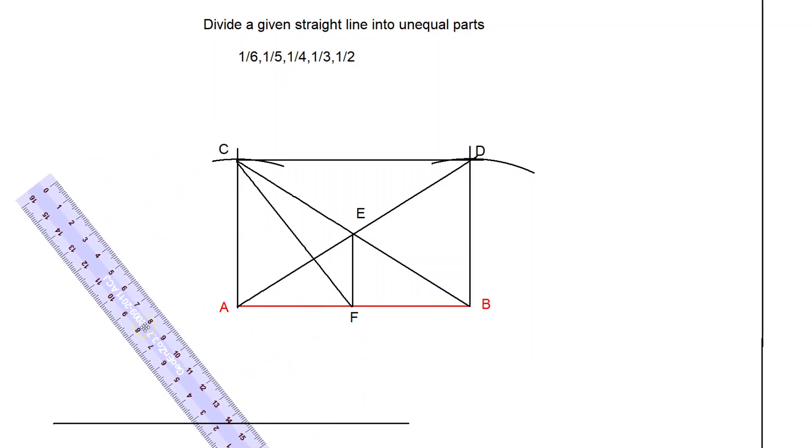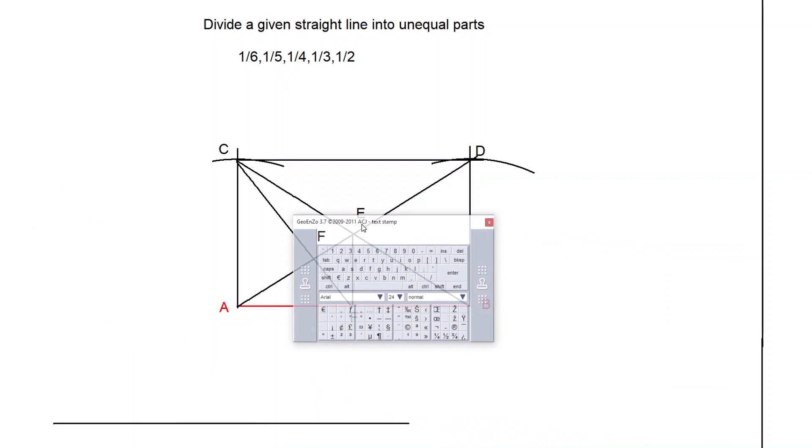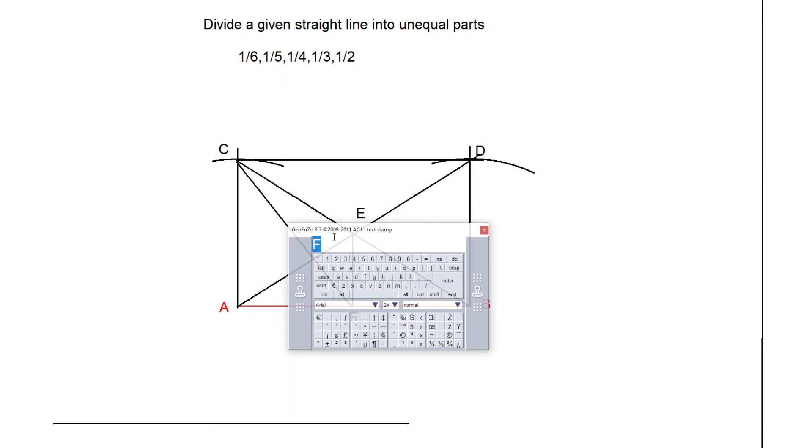Now see where it is cutting the diagonal AD, or you can say diagonal at any point G. Give this one name as G.